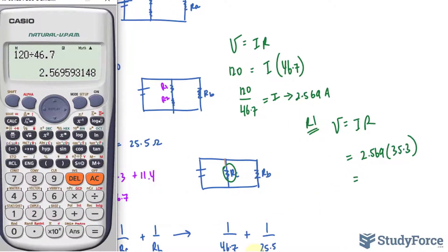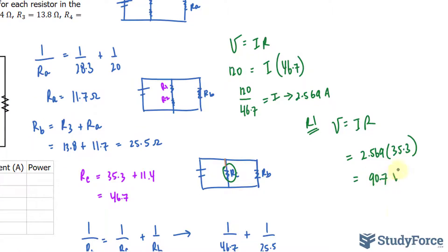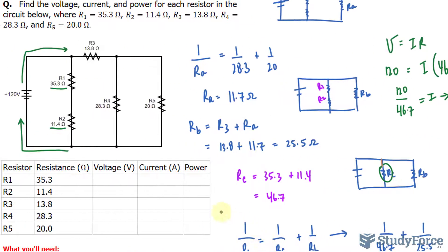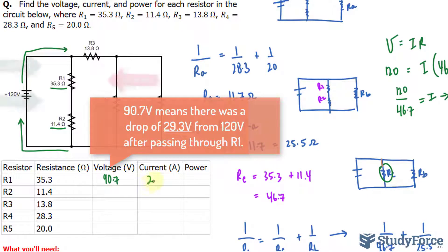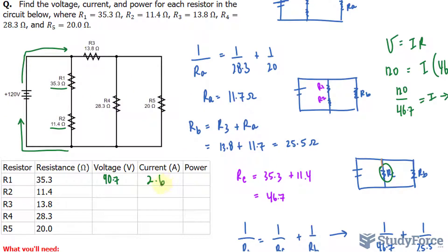Taking the value on our screen and multiplying by 35.3 gives us the voltage at R1, which is 90.7 volts. I'll write that into this chart: 90.7 volts, the current being 2.569, which roughly translates to 2.6. Multiplying these two out gives the power, which equates to roughly 233. Moving forward I'll be rounding to one decimal place.